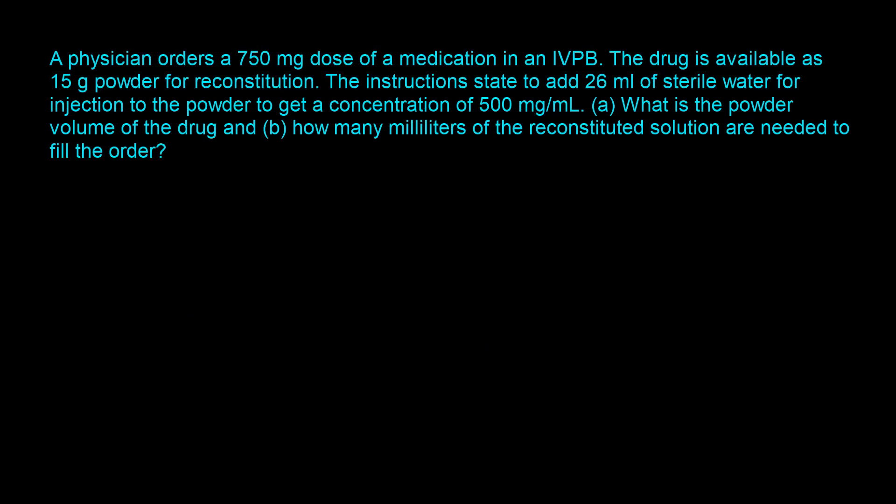This question says: a physician orders a 750 milligram dose of a medication in an IVPB. The drug is available as 15 gram powder for reconstitution. The instructions state to add 26 milliliters of sterile water for injection to the powder to get a concentration of 500 milligrams per milliliter. A: What is the powder volume of the drug? And B: How many milliliters of the reconstituted solution are needed to fill the order? So let's start with the solution to part A.